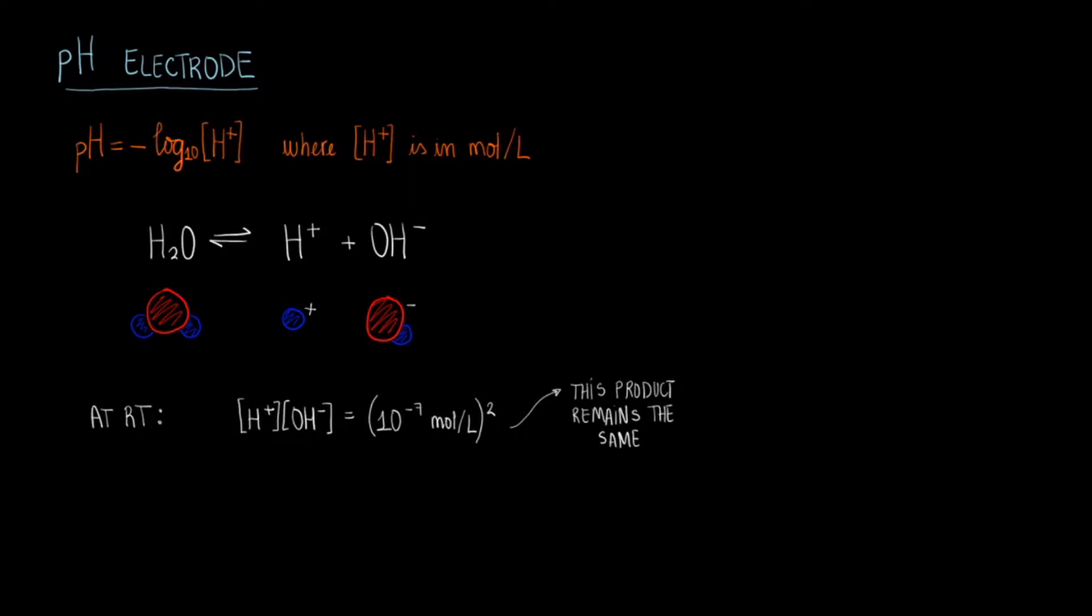When you have more hydroxide ions your pH falls above 7 and we consider such a solution to be basic. When you have roughly equal amounts of each ion the pH is 7 and you have a neutral solution. Note that a pH of 7 is actually the pH of pure water. Finally when you have more hydrogen ions than 10 to the negative 7 in solution you have an acidic solution.